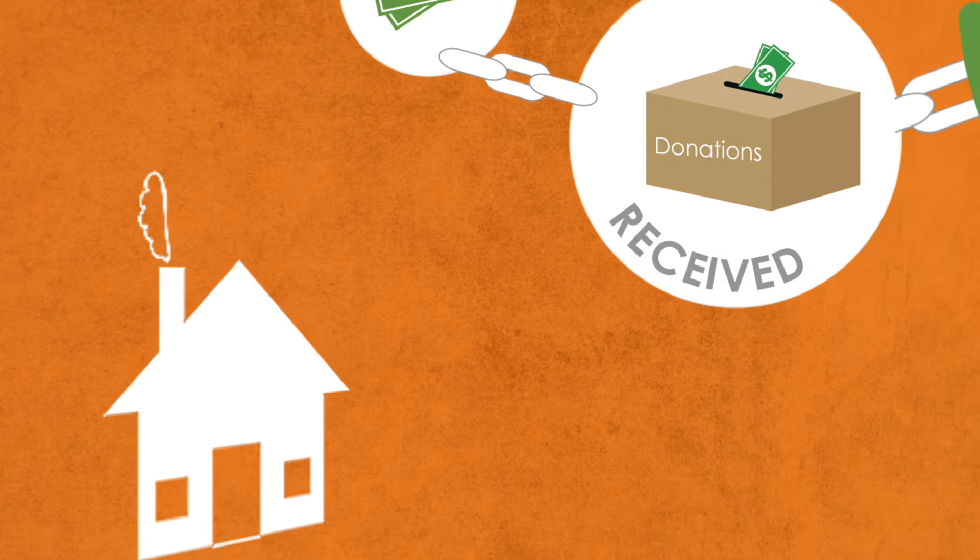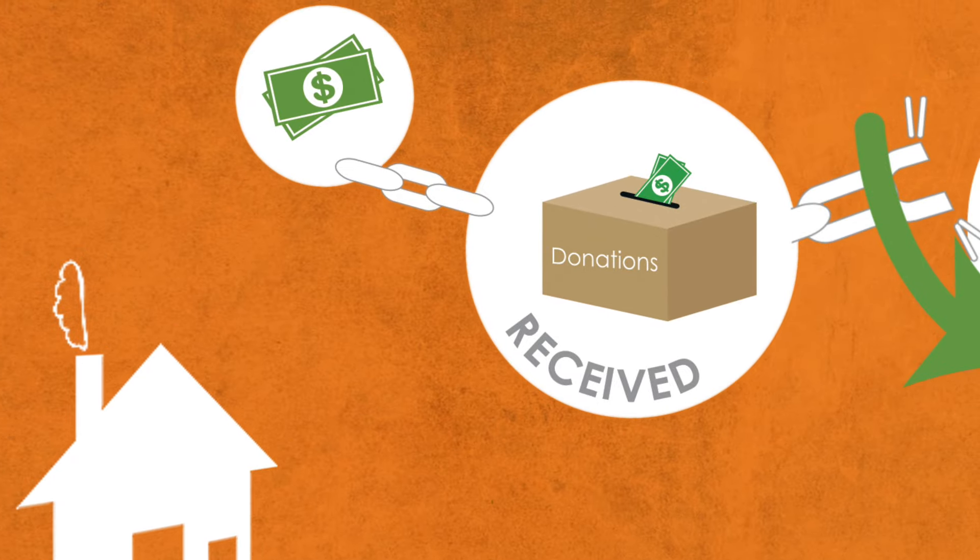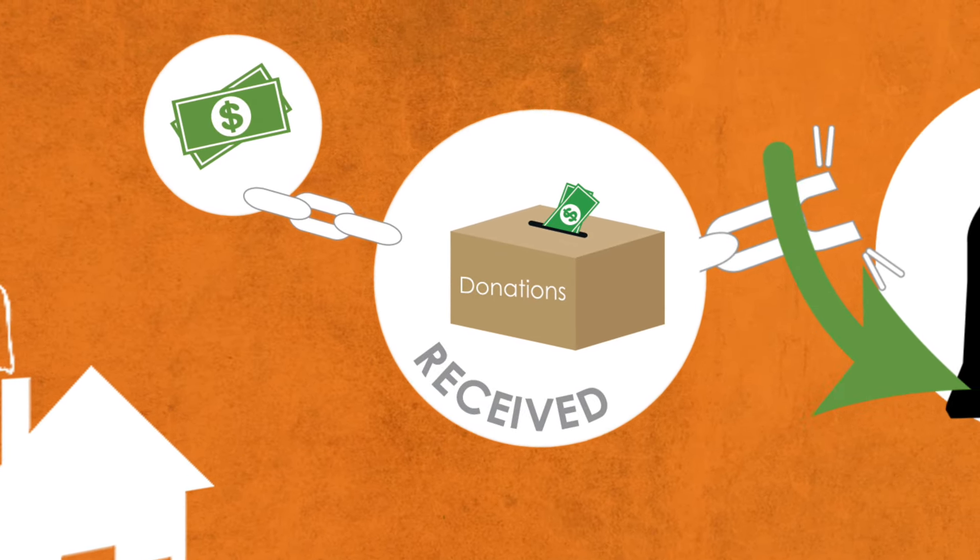Remember, like a chain, if one of these is broken, the entire thing is compromised. Say the person who counted the money took some. Without internal controls around that process, there would be no way of knowing if they took the money or not.